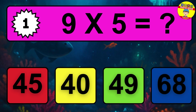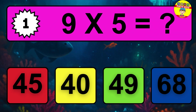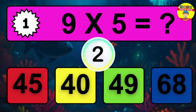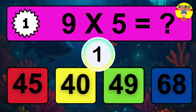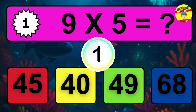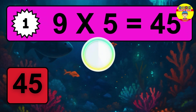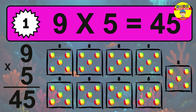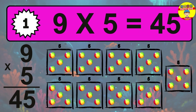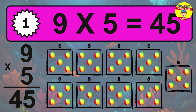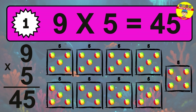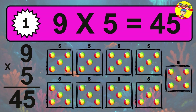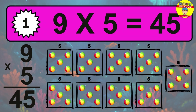Question 1. 9 times 5 equals what? The answer is 9 times 5 is 45. To calculate, we have 9 groups with 5 balls each one. So how many balls do we have? 45 balls.